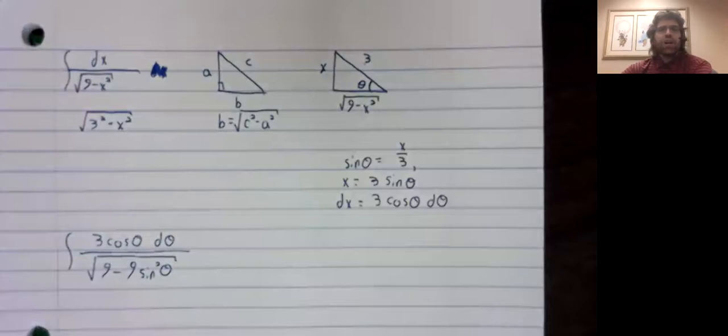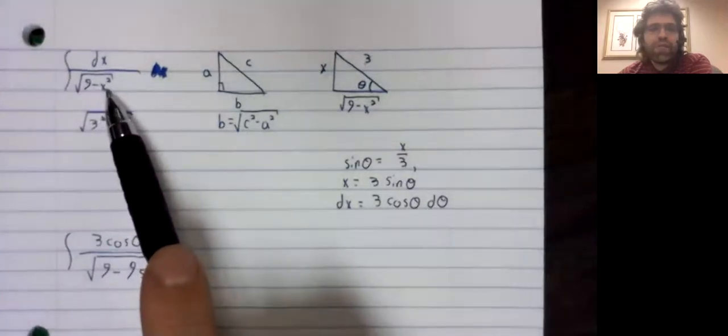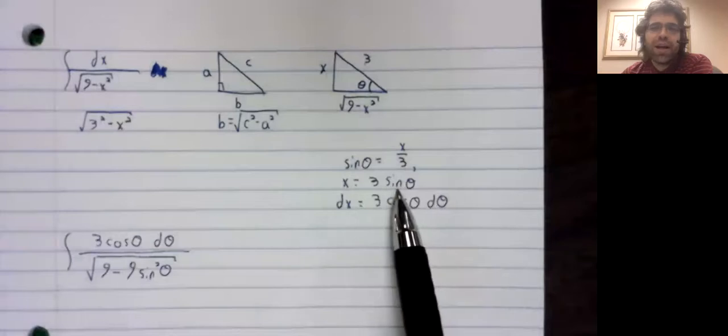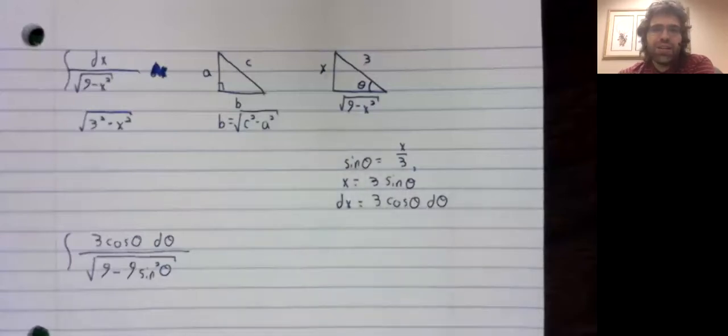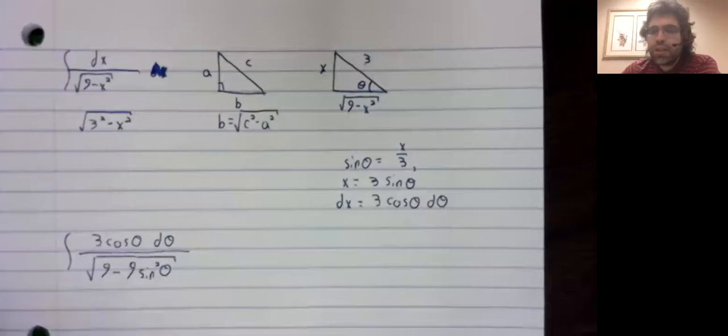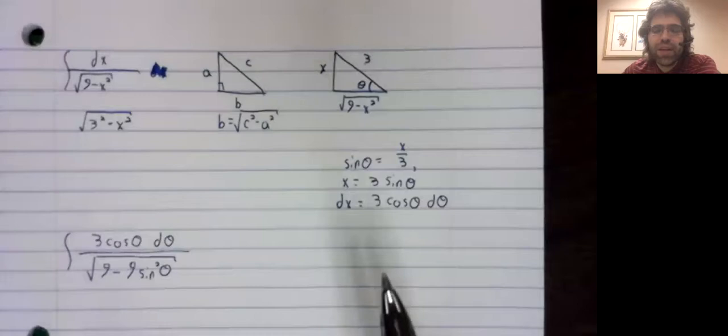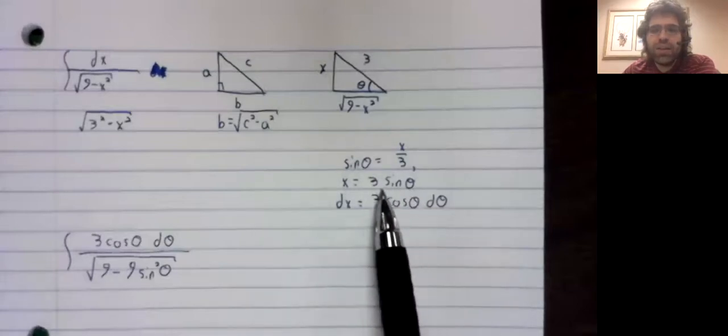And it's hard to believe that the integral you get when you replace your nice simple variable x with some kind of trigonometric function will ever be nicer than the original integral. This is like anti-u-substitution. When you have u-substitution, you take something complicated, like the cosine of x, and you replace it with something simple, u. Here we're going in exactly the opposite direction. We're taking something simple, x, and we're replacing it with a more complicated function.